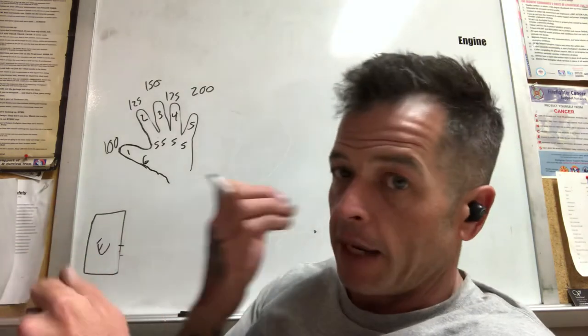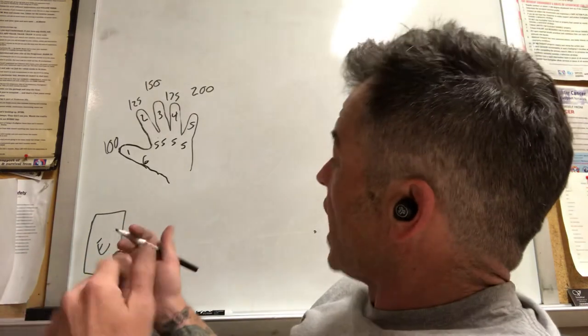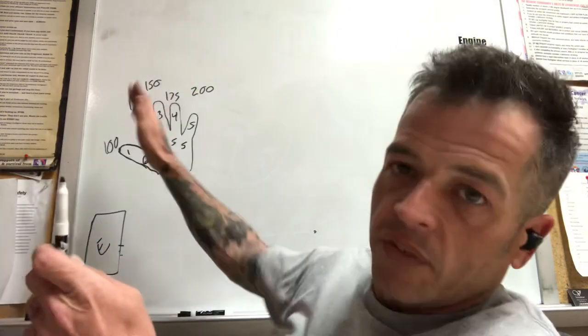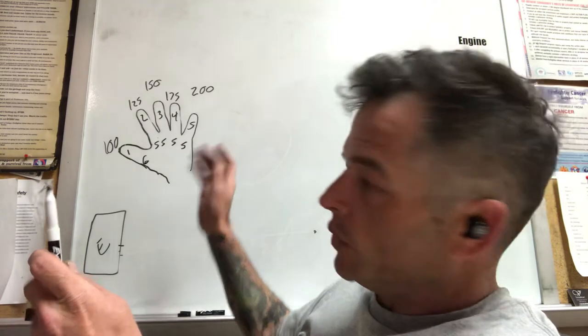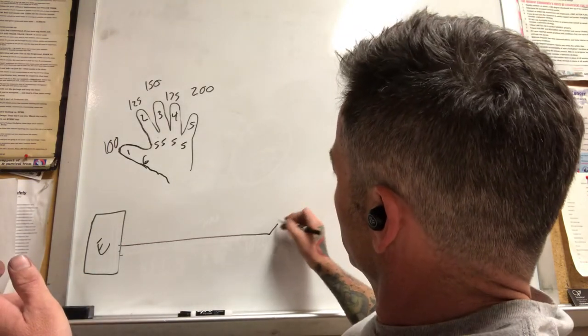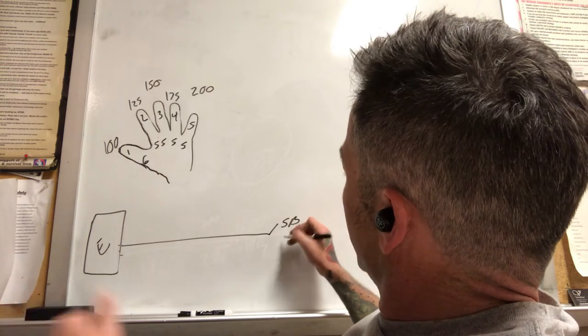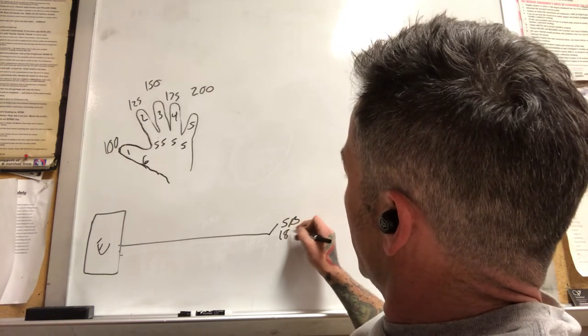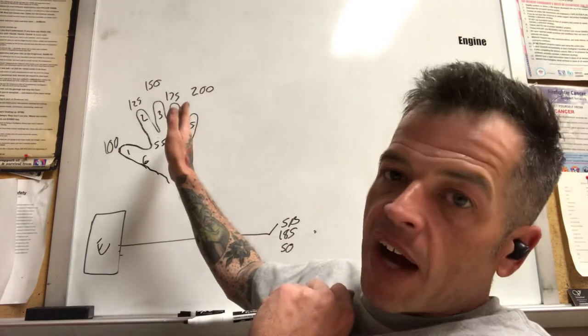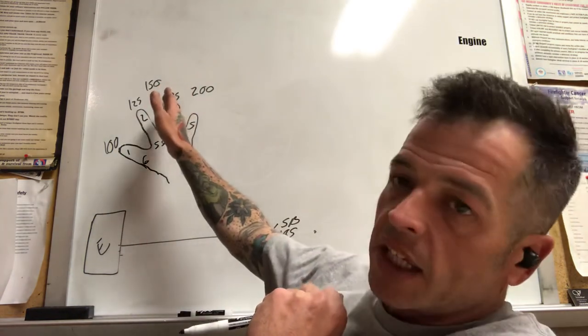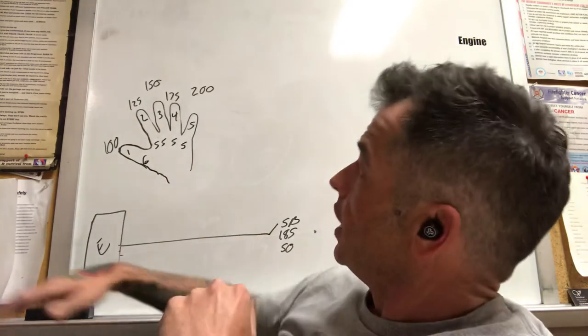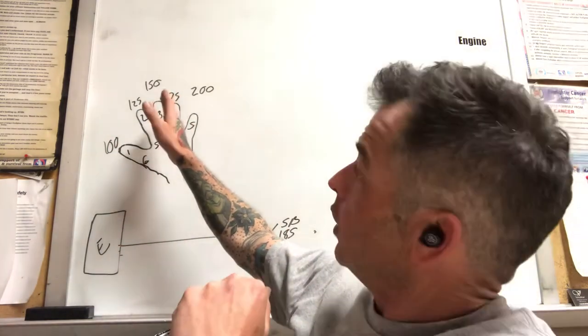The last thing is if you have smoothbores that don't have the standard 25 increment values. So let's say you have a smoothbore nozzle and let's say it's got a value of 185 at 50. I don't have 185 but I have 175 and 200. So what I typically like to do is I'm going to go up to the number that's right below it and close.